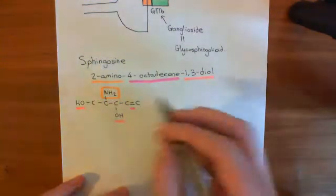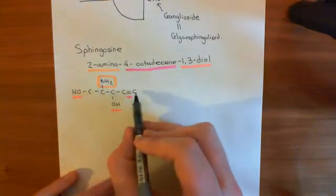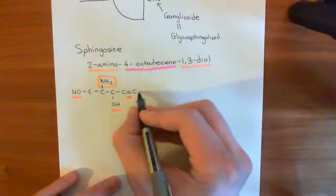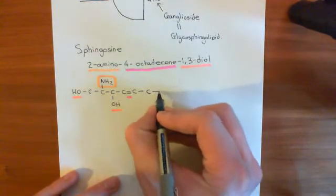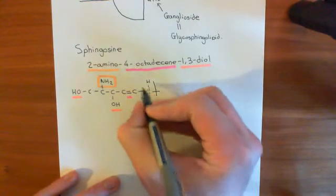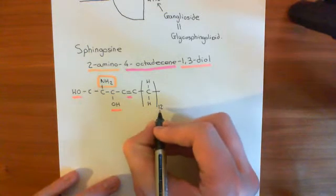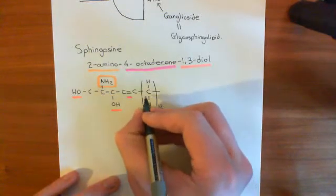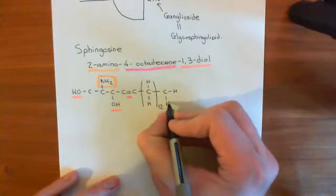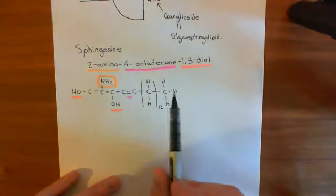Now all we need to do is put the rest of the carbons on and bind everything else to hydrogen. We've put on five carbons, and octadecine means we should have 18, so we've got 13 left. That means we're going to have 12 methylene groups and then a final methyl group on the end. I can put one methylene group in a bracket and put 12 at the bottom to denote 'repeat this 12 times.' Let's check: 1, 2, 3, 4, 5, plus 12 gives 17, then 18. So that's done.